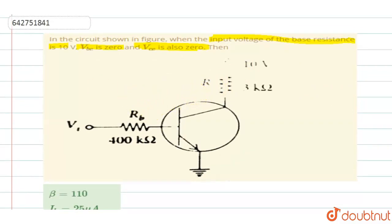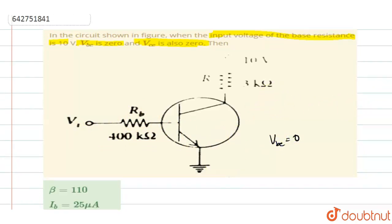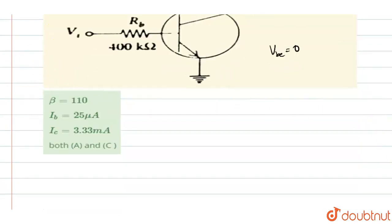In this, they have told you one more thing that VBE is 0, right? So, the voltage across the base and emitter, this will be 0. So, if VBE is equal to 0, then the potential across RB will be equal to the base resistor RB. The potential across RB, you can calculate. So, potential across RB will be equal to the voltage, it is equal to 10V.